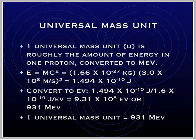Now finally, we can use a unit called a universal mass unit to represent the amount of energy that's in one proton. So the universal mass unit is how much energy is stored in a proton, and it is converted into an energy unit called MEVs, which are ten to the sixth electron volts or a million electron volts.